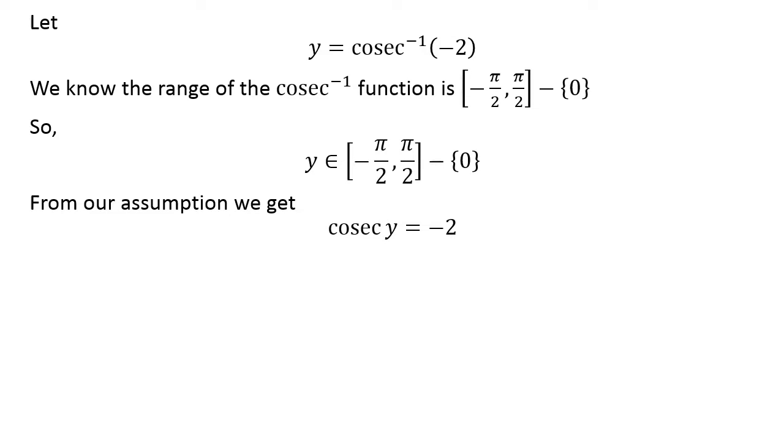Applying properties of inverse functions, we can rewrite y = cosec^(-1)(-2) as cosec(y) = -2.